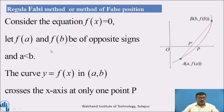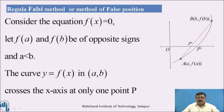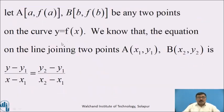Consider the equation f(x) = 0, and let f(a) and f(b) have opposite signs with a < b. The curve y = f(x) in the interval [a, b] crosses the x-axis only at the point P, as shown in the figure. Let A = (a, f(a)) and B = (b, f(b)) be any two points on the curve y = f(x).